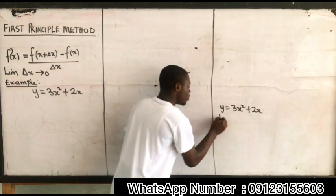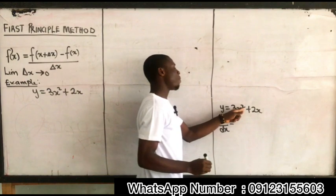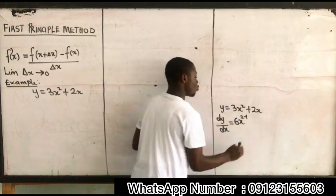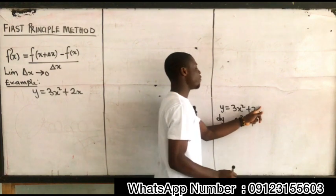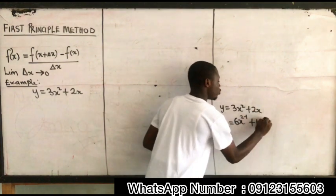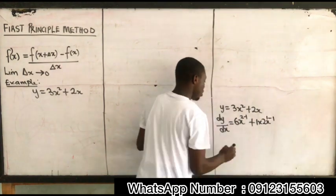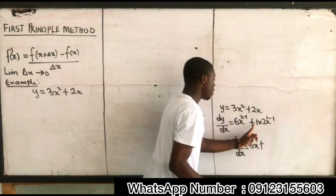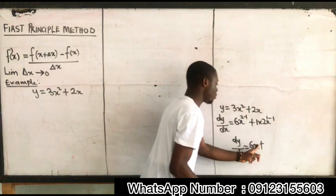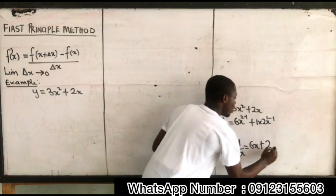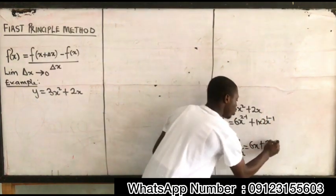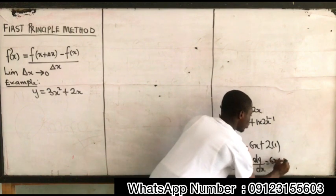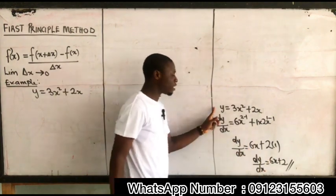So applying the general method to 3x squared plus 2x: dy/dx is equal to — multiply by the power, the power here is 2, so 2 times 3 becomes 6x, then 2 minus 1. Plus, the power here is 1, so 1 multiplied by 2x, then 1 minus 1. So dy/dx equals 6x plus 2. This is the general method answer after differentiating.